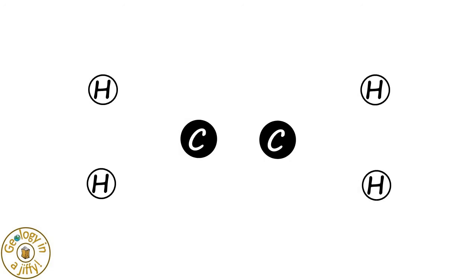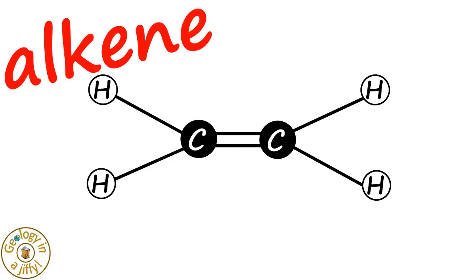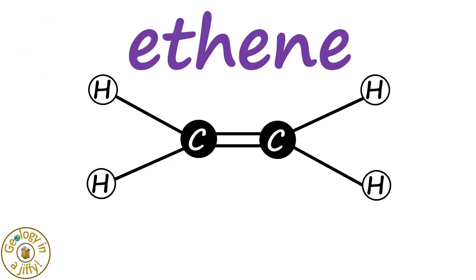If we remove the cartoons, we are left with two carbon atoms and four hydrogen atoms. If we add the carbon-carbon double covalent bond, then the carbon-hydrogen single covalent bonds, we have the simplest alkene molecule, called ethene.